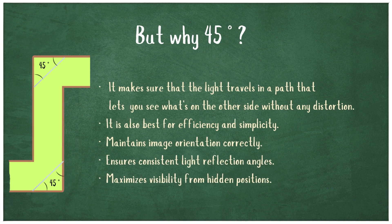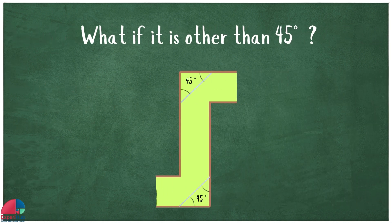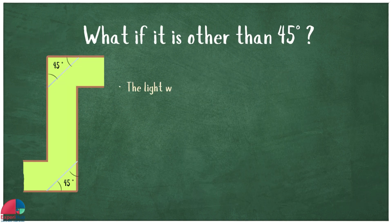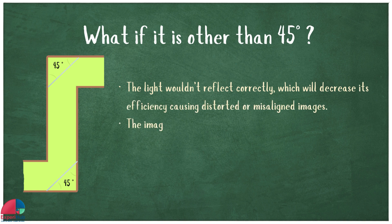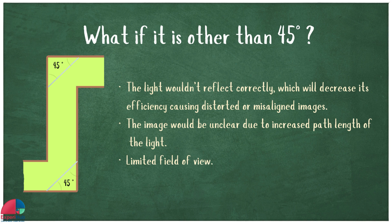If the angle were different, the light wouldn't reflect correctly, which would decrease its efficiency. The image would be unclear due to increased path length of the light, and there would be limited field of view.